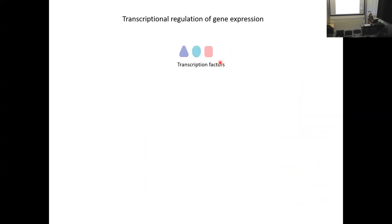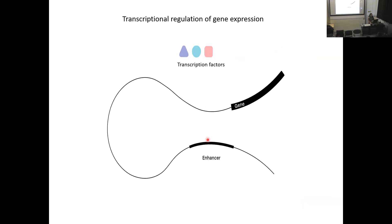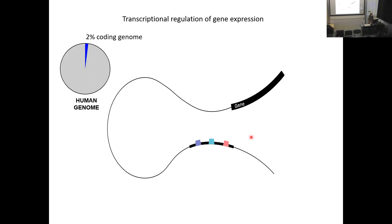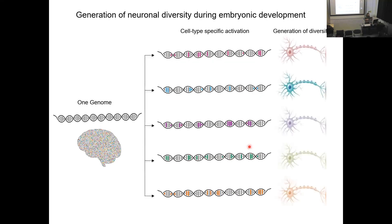How is gene expression regulated? There are factors that are very important in this process — they recognize regions in the genome called enhancers through small degenerate DNA binding sites that recruit different factors including RNA polymerase and transcription machinery. In contrast to our well-established knowledge of the genetic code, we know very little about the sequence determinants that regulate enhancer function. Most disease-linked mutations don't lie in coding genome but outside of it, and because we know so little about enhancer sequences, it's very difficult to assign biological meaning to those mutations.